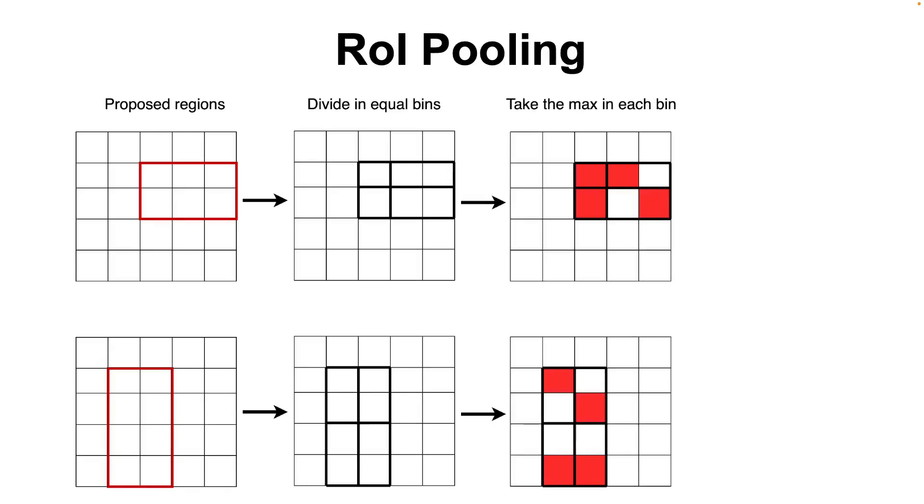Thus, we get a fixed length feature vector for each region proposal, which is then fed into a series of fully connected layers to perform object classification and bounding box regression.